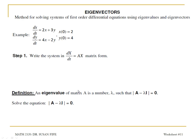Now we'll get to eigenvectors. We're going to use eigenvectors and eigenvalues to come up with a solution to a system, and we're going to use this system as an example. We're also given initial values. When we look for eigenvalues and eigenvectors, we're using the matrix form of the equation, so I'm going to start by writing this system in matrix form.